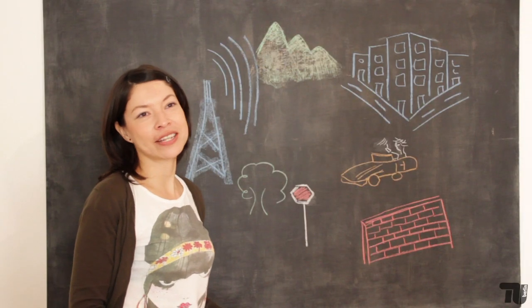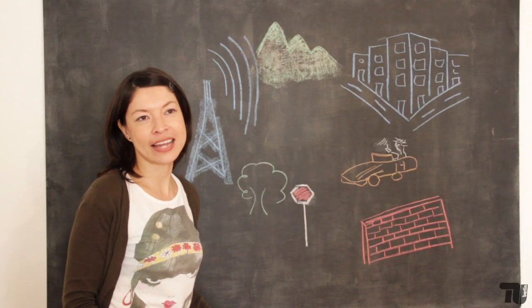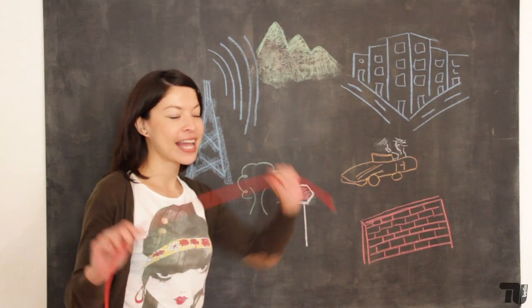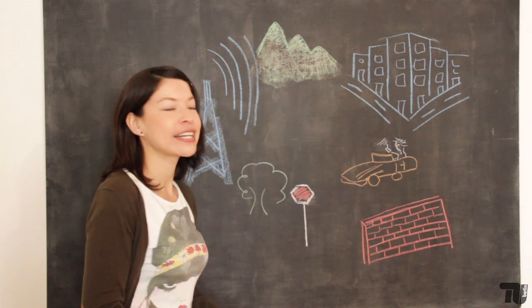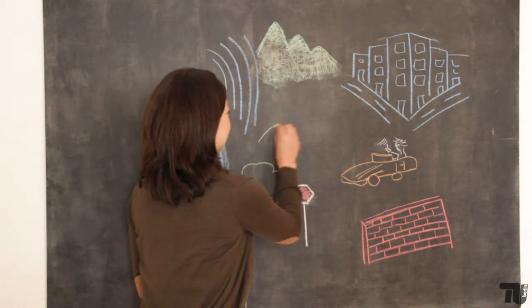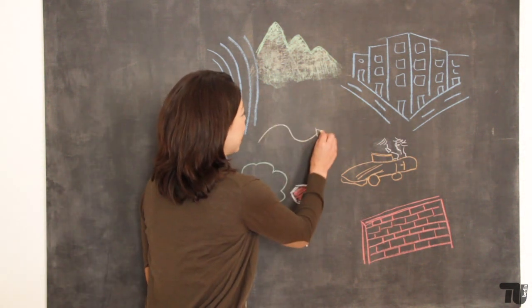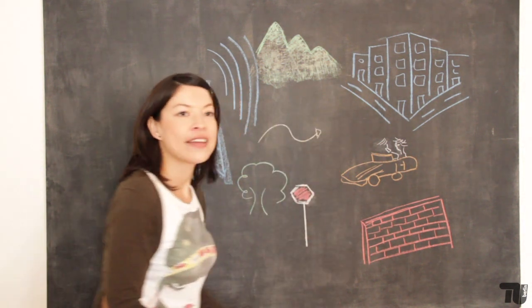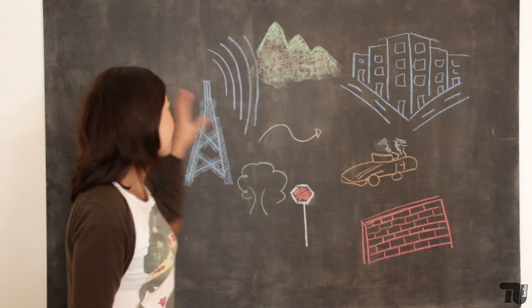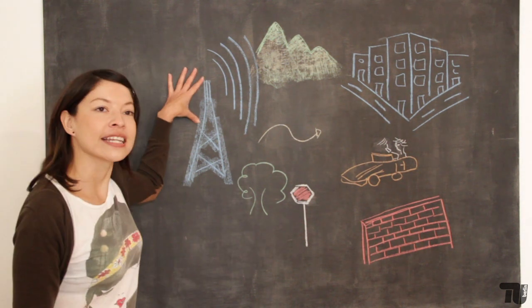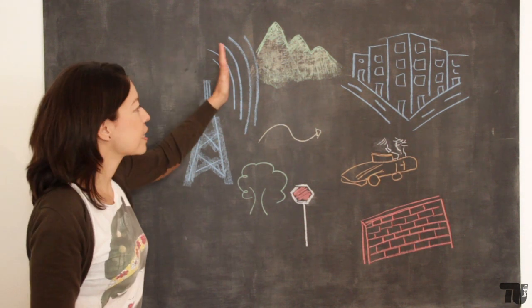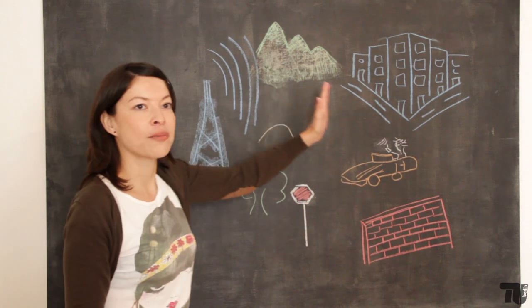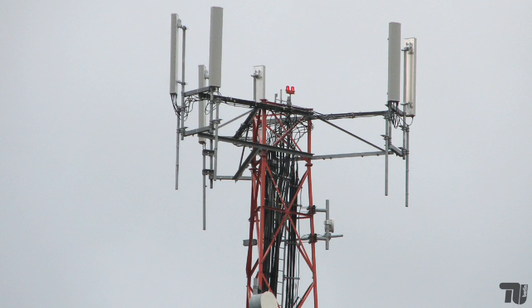Für den Transport der Daten in der Mobilkommunikation benutzen wir nicht mehr Kabel, sondern elektromagnetische Wellen. Diese Wellen bzw. Signale werden in einem Sender generiert und dann mittels einer Antenne in den Raum ausgestrahlt.